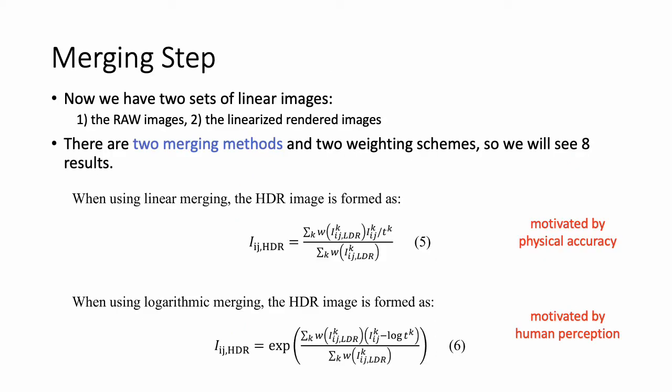Now, we consider two sets of linear images: the raw images and the linearized rendered images. There are two merging methods and two weighting schemes, so we will see eight results.